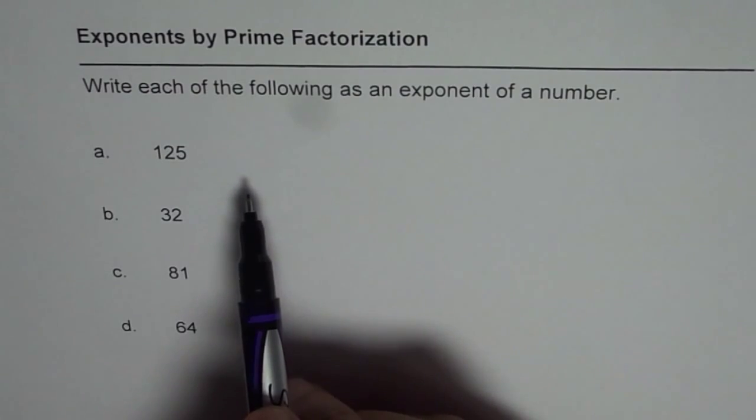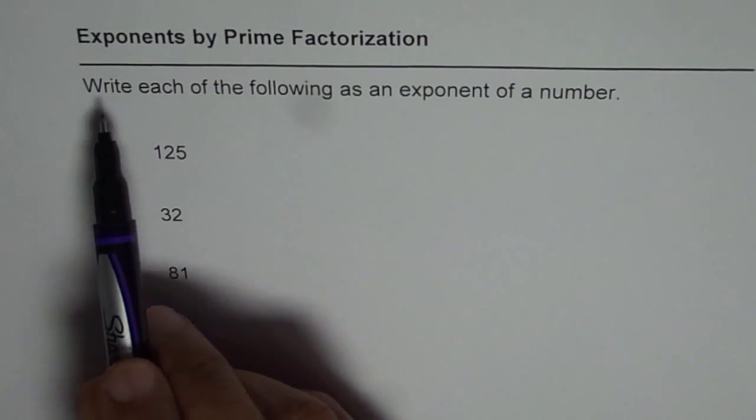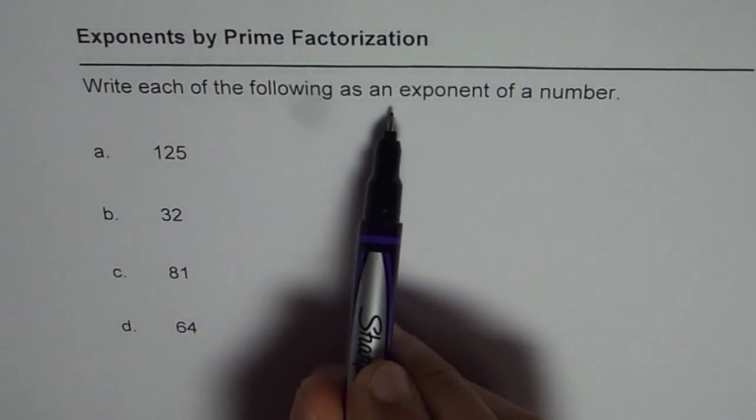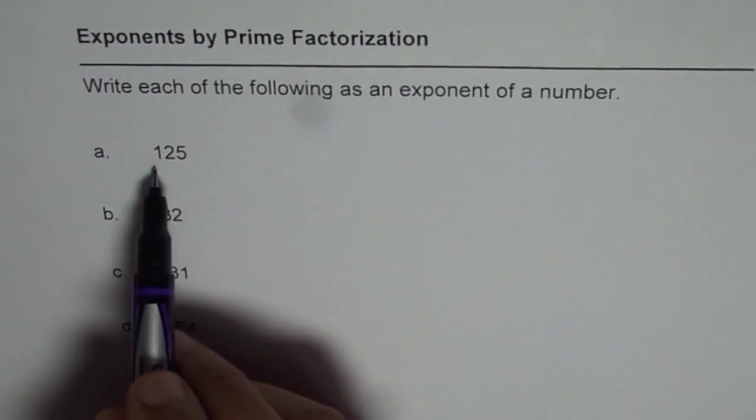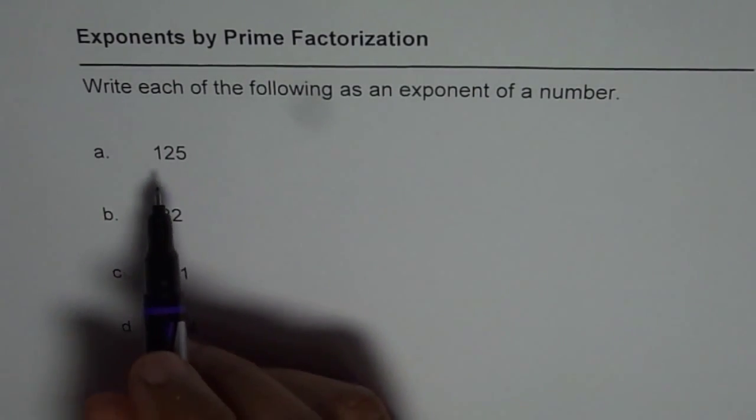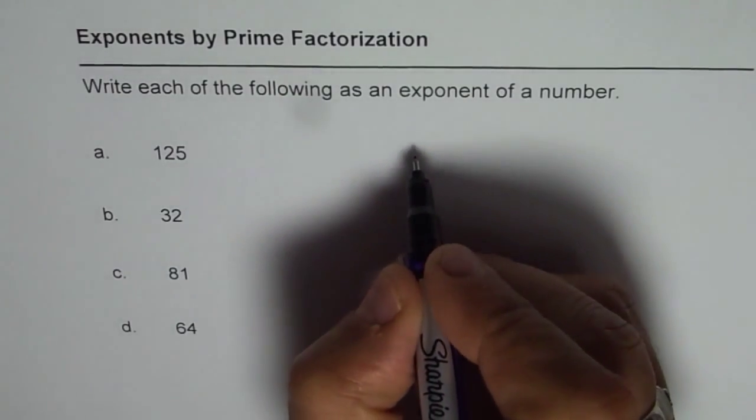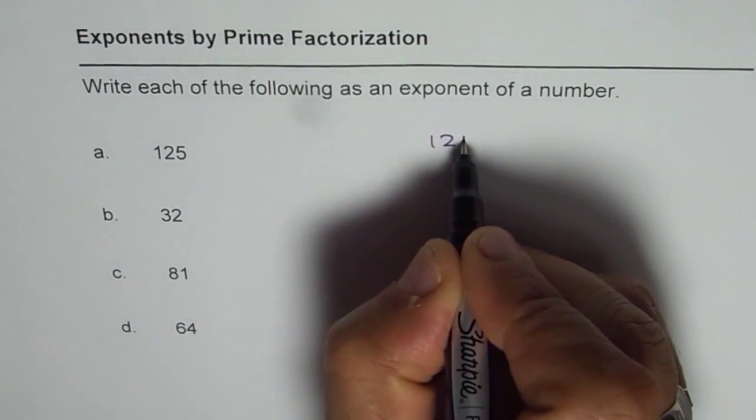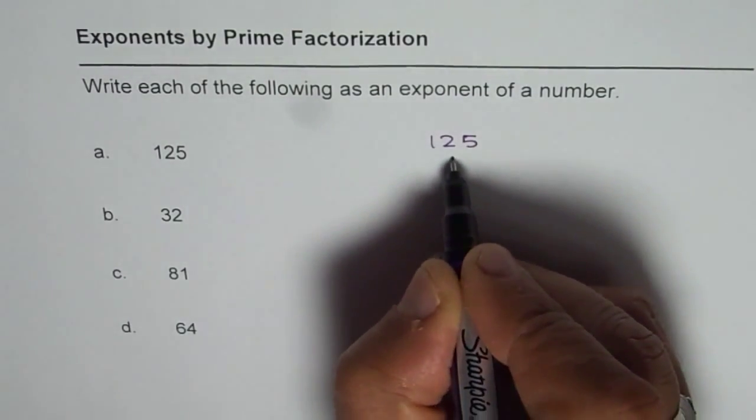We'll see that just in a minute. The question here is write each of the following as an exponent of a number: 125, 32, 81, 64. These are very common numbers which you are always going to work with. So let's work with 125 first. So 125, we'll do prime factorization.